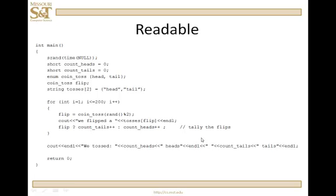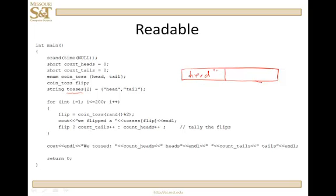Most often, enumerations are used solely for the purpose of making your code readable. Let's take a look at this little program. I'm going to seed the random number generator and create two shorts — count heads and count tails — initialized to 0. I create an enumeration called coin toss with values head and tail, and a coin toss variable called flip. I also have an array called tosses of size 2 with base type string, with values head and tail — used solely for output.